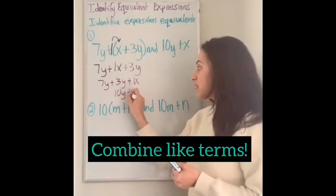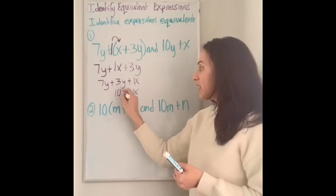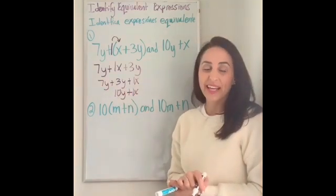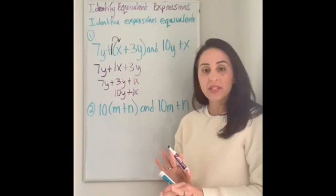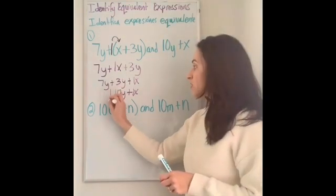I can combine seven plus 3y is 10y. So I'm going to write 10y plus one x. Can I do anything else with this? No, I can't because they don't have like terms. Okay. Now that I'm done there, I'm going to box around it.